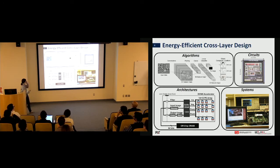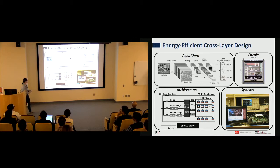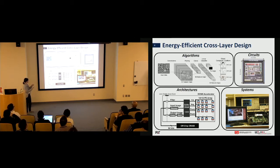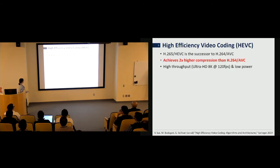Within our group we take a very cross-cutting approach: we start with algorithms and applications to understand what type of algorithm gives the best quality, then push down to hardware architectures — where to put memory, how much — then fabricate custom circuits, and finally integrate the chip into an actual system. We want to demonstrate end-to-end results: taking pixels in and taking an action, not just bits-in, bits-out.